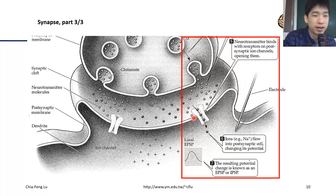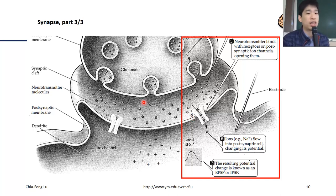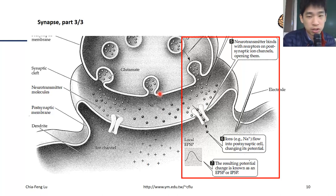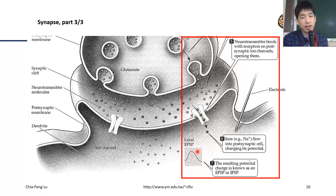Once the neurotransmitter like glutamate finishes its mission, it needs to be recycled for later use. Glutamate is converted to glutamine and then transferred back to be reused as a neurotransmitter. The type of neurotransmitter released from the presynaptic area is critical: glutamate causes excitation (EPSP) in the postsynaptic cell, while GABA causes inhibition (IPSP) in the postsynaptic area.